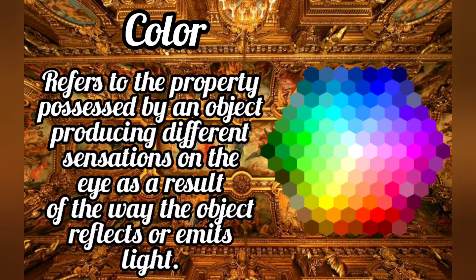The next is color. Color is one of the most dominant elements. It refers to the property possessed by an object producing different sensations on the eye as a result of the way the object reflects or emits light. Examples are red, orange, green, violet, blue, and many more.